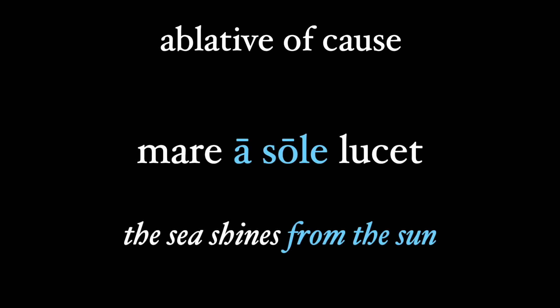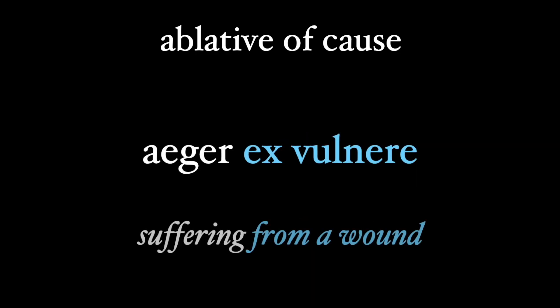The ablative of cause can also be found with a preposition. Mare a sole lucet — the sea shines from the sun, or because of the sun, when the sun causes the shining. We can see from this sentence how the ablative of cause stems from the ablative of source. Aeger ex vulnere shows an ablative of cause — suffering from a wound — where the wound is the cause of the suffering.